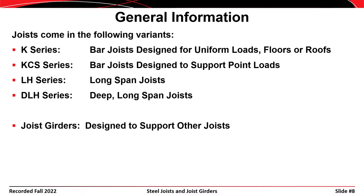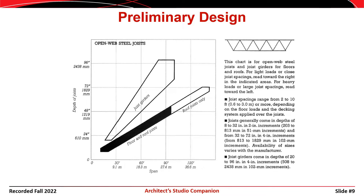This graphic from the Architect Studio Companion provides a means for estimating the depth of steel joists based on preliminary information. You look at the span the joist has to achieve and from there determine the approximate depth you'll need. It also indicates that joist spacings range from two to ten feet and joists come in depths from eight to thirty-two inches. One thing to note: joists are often spaced more closely together than rolled steel beams would be.